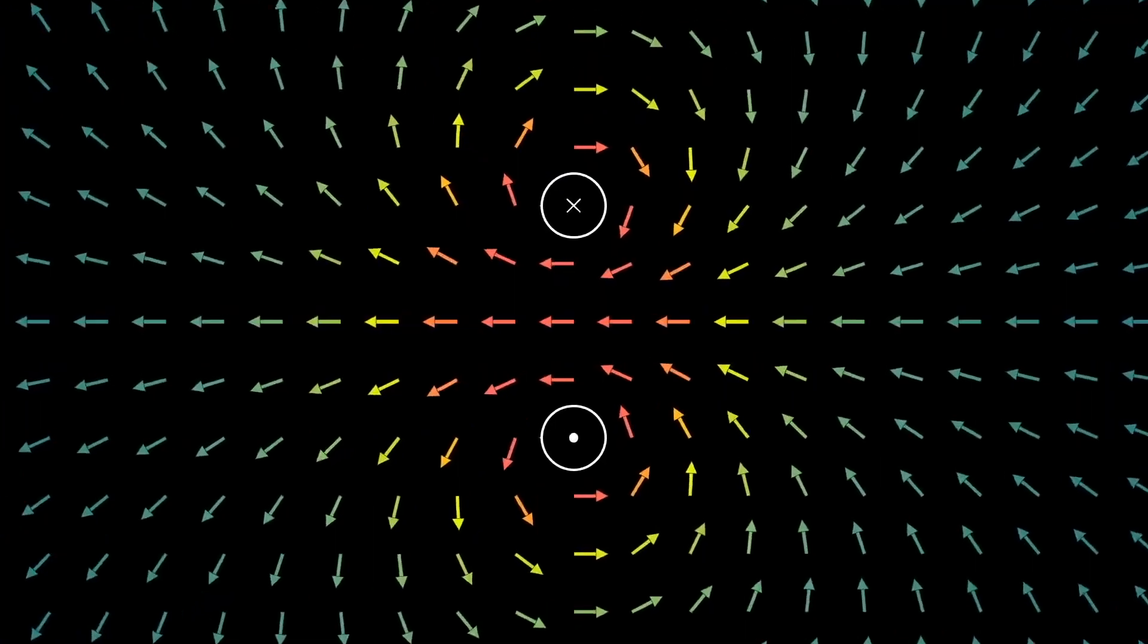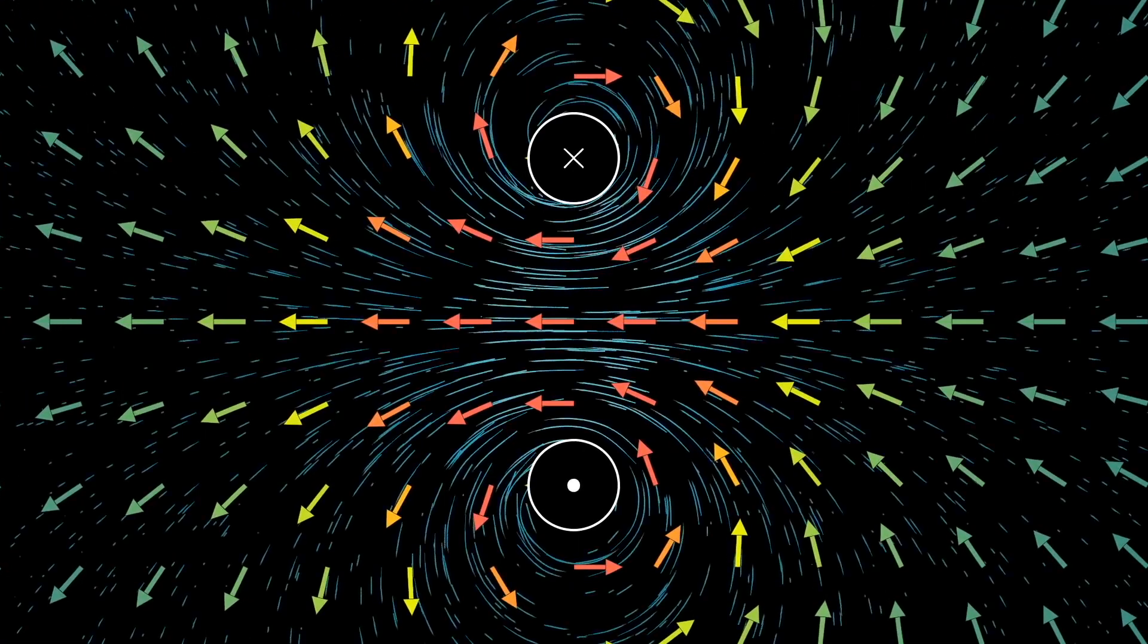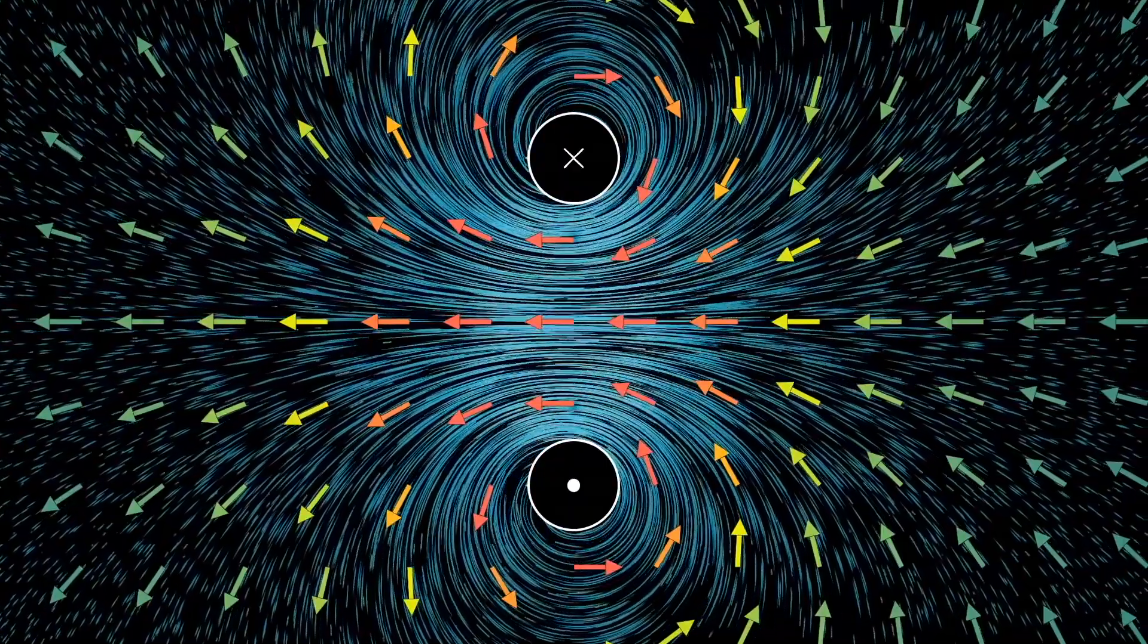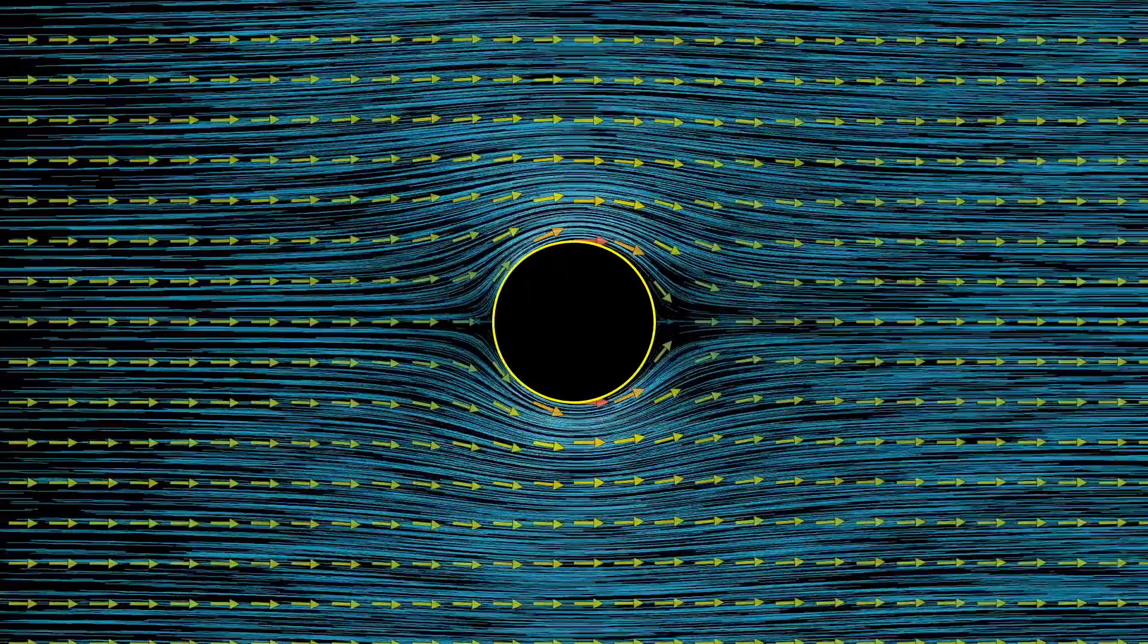A classic example of a vector field is the velocity field of a fluid or gas flow. We can determine the magnitude and direction of the flow's velocity vector at any point and construct the corresponding field. The appearance of this field will, of course, be determined by the physics of the processes affecting the fluid or gas flow.